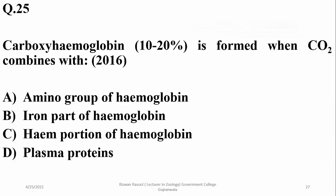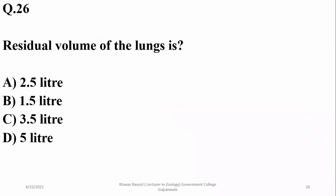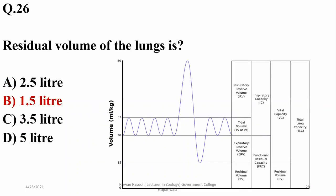Question twenty-four: carboxyhemoglobin is formed when CO2 combines with the amino group of hemoglobin, so alpha is correct. The residual volume of the lungs is 1.5 liters, which is never exhaled — even after forceful expulsion, 1.5 liters remains as residual volume.